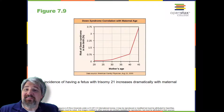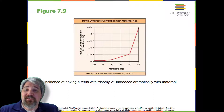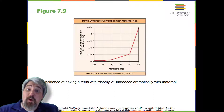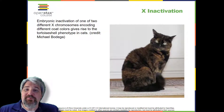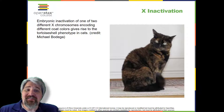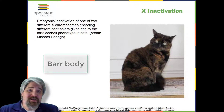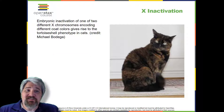Humans display dramatic deleterious effects with autosomal trisomies and monosomies. Therefore, it may seem counterintuitive that human females and males can function normally despite carrying different numbers of the X chromosome. In part, this occurs because of a process called X inactivation. Early in development, when female mammalian embryos consist of just a few thousand cells, one X chromosome in each cell inactivates by condensing into a structure called a Barr body.